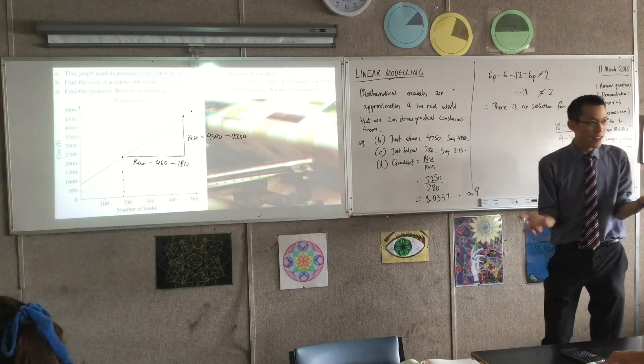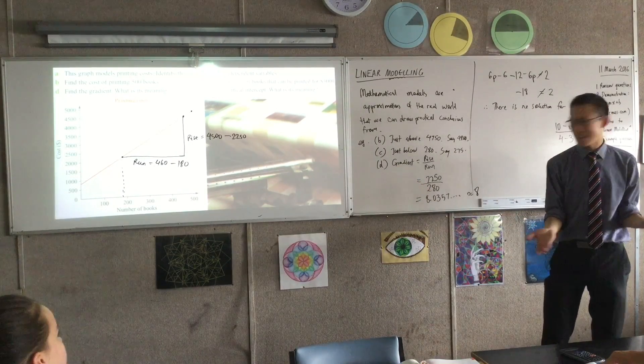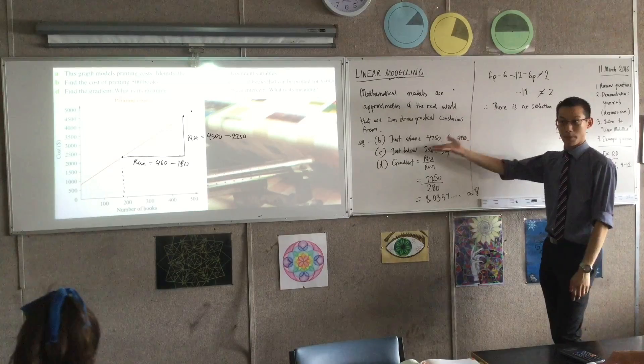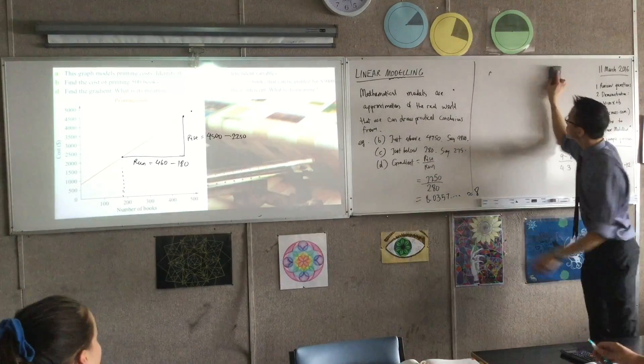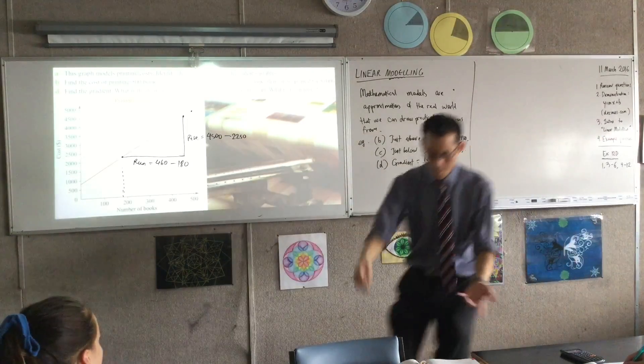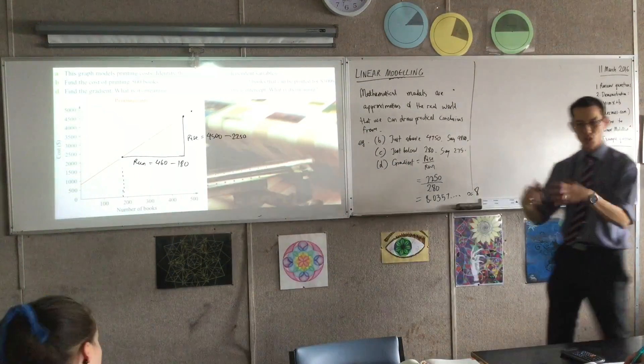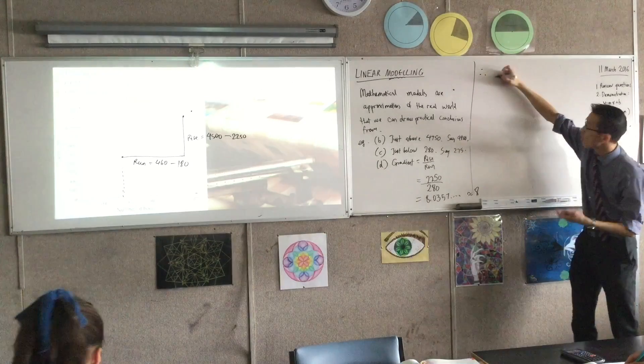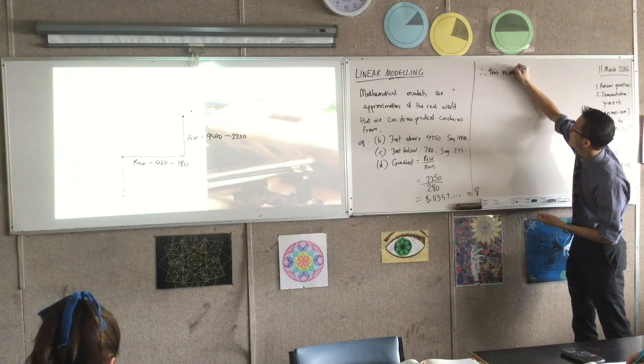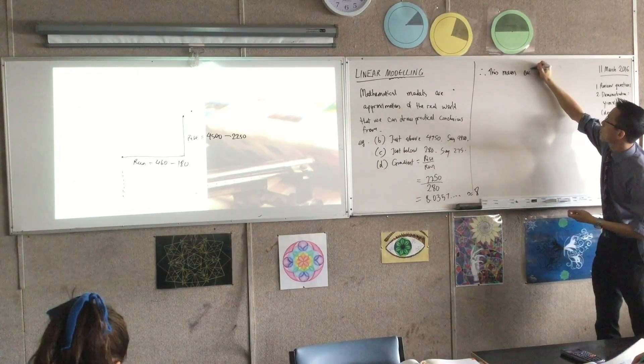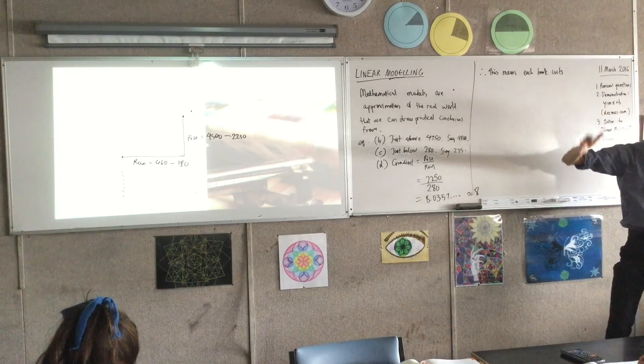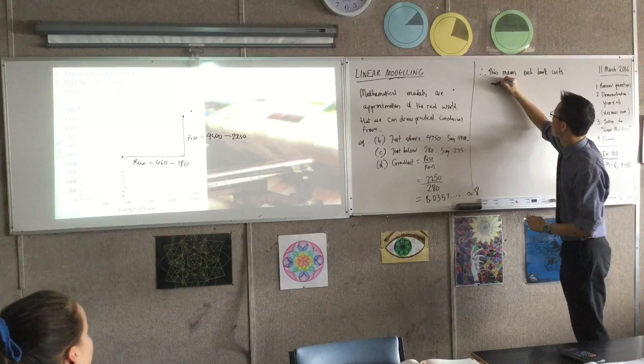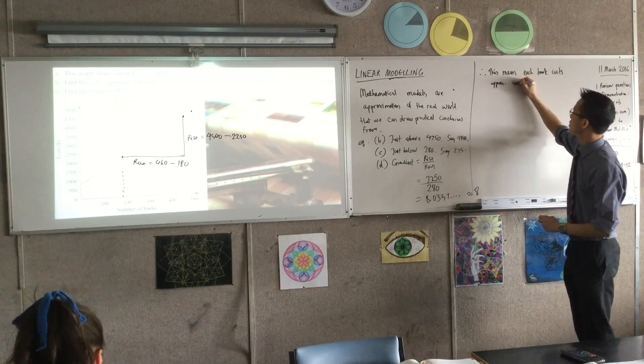$8, 1 book. So what does that mean? Like, what's the meaning of the gradient? It's the price of 1 book, right? That's what the gradient means in this particular, on this particular graph, right? So I'm going to conclude now. I'm going to say this number is not just a number, it's attached to a context, right? Therefore, this means each book costs, and I'm going to say approximately as well, because we knew it was approximate, costs approximately $8 to print.